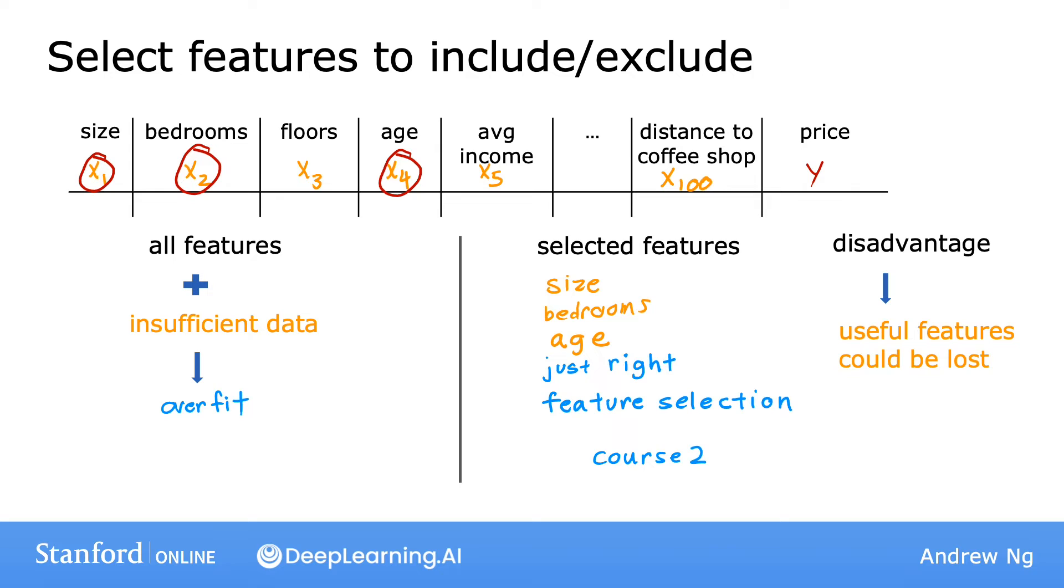Later in course two, you'll also see some algorithms for automatically choosing the most appropriate set of features to use for prediction. Now, this takes us to the third option for reducing overfitting. This technique, which we'll look at in even greater depth in the next video, is called regularization.